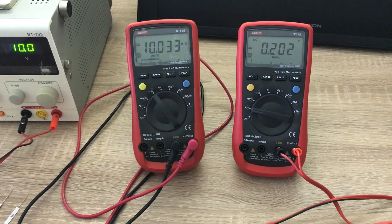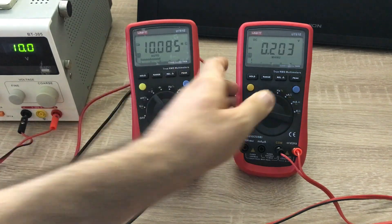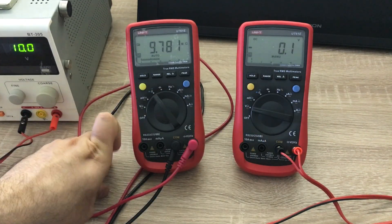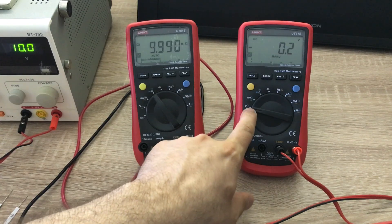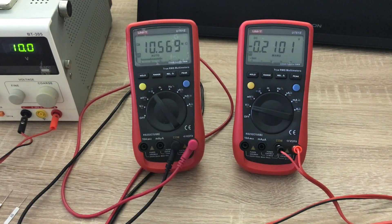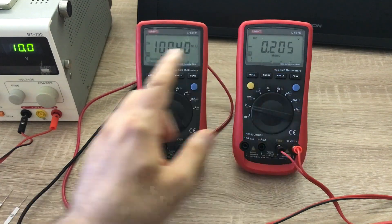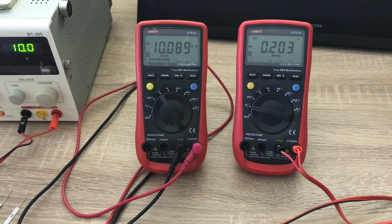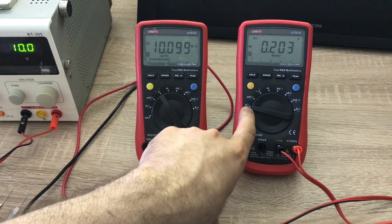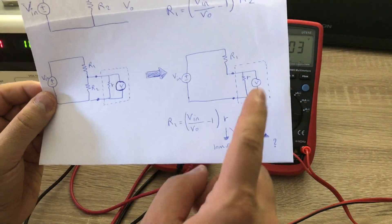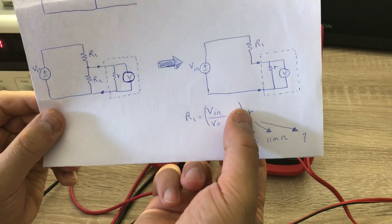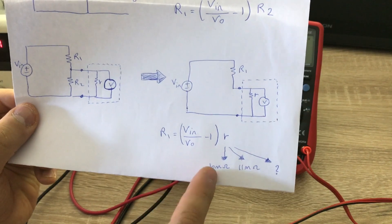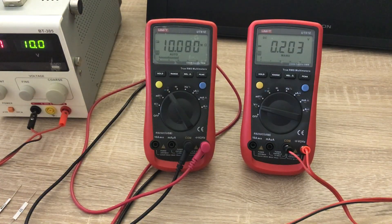If I change to a higher range, the input impedance becomes 10 megaohm. And for every other higher range it is also 10 megaohm. So for this multimeter on the voltage range there are two possible input impedances: 11 megaohm for the lowest range (below 2.2 V), and 10 megaohm for all higher ranges (above 2.2 V).